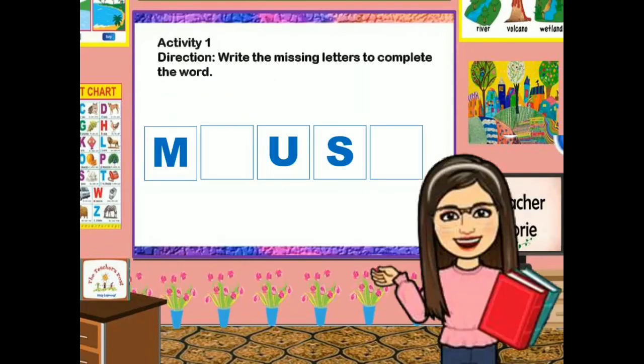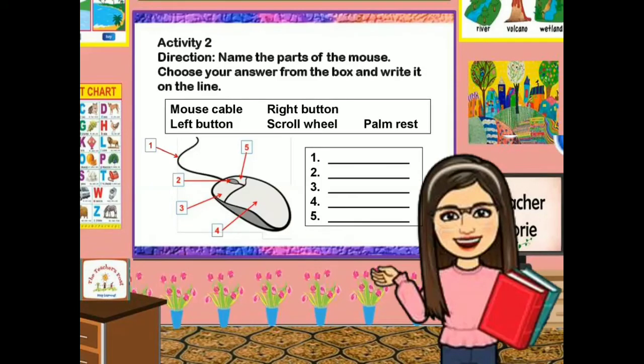For activity one, write the missing letters to complete the word. For activity two, name the parts of the mouse — choose your answer from the box and write it on the line.